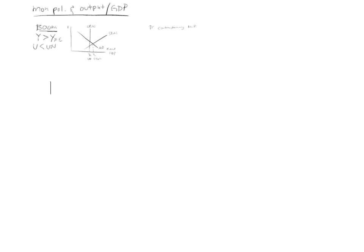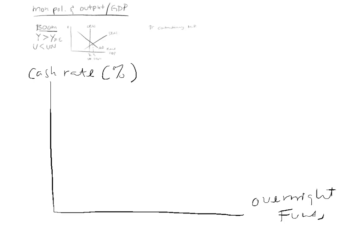What you have here, if you want to draw the graph: cash rate, overnight funds. Initial money supply is over here. Initial money demand is over here. Interest rate is R1.